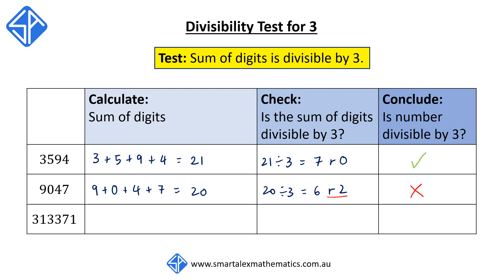Our last example, 313,371. First step, add up all these digits: 3 plus 1 plus 3 plus 3 plus 7 plus 1. This is equal to 18. Then, check if 18 is divisible by 3. 18 divided by 3 is 6 with a remainder of 0. Since the remainder is 0, that means the sum of the digits is divisible by 3, and therefore 313,371 is divisible by 3.